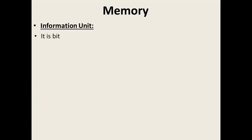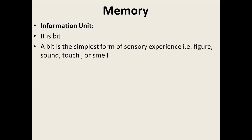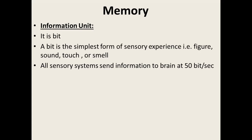Memory is an information unit. A bit is the simplest form of sensory experience — such as seeing a figure, hearing a sound, a touch, or a smell. That particular sensory experience is given as a bit of information. All sensory systems send information to the brain at around 50 bits per second. That is the capacity of the sensory system.